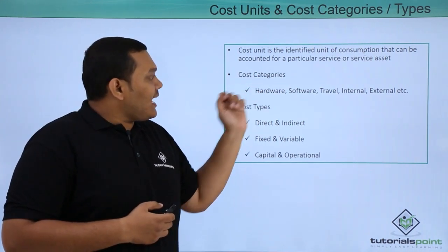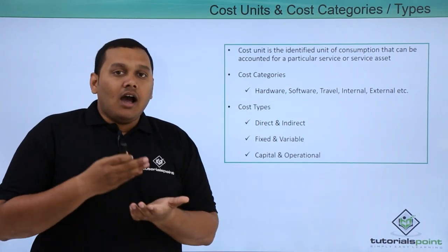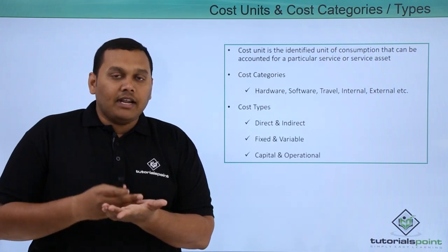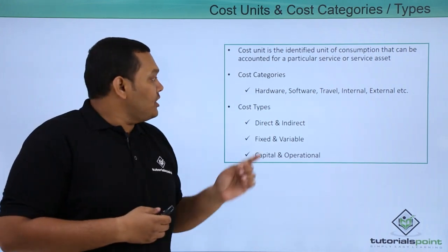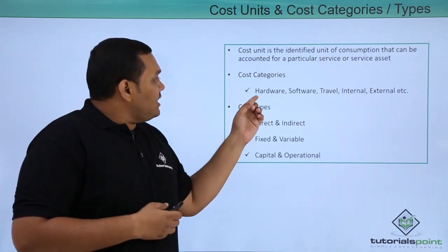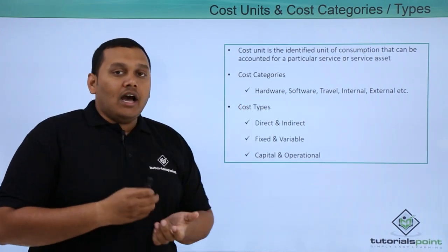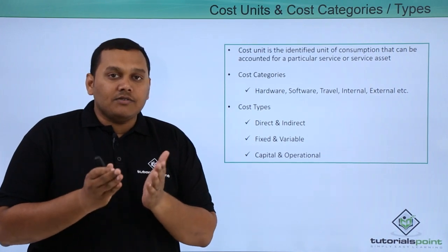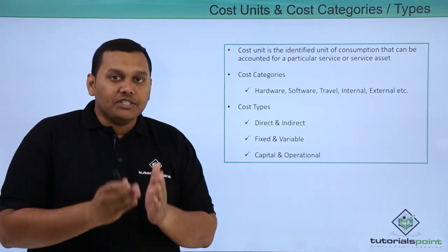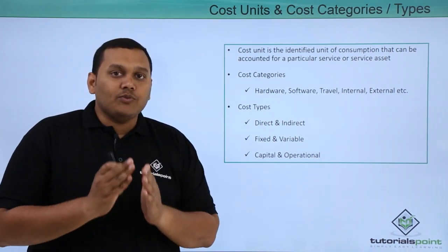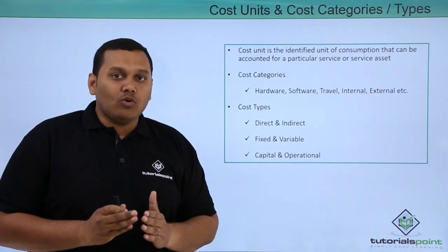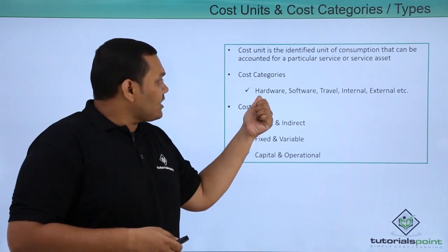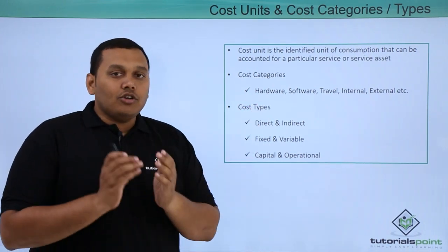Coming to the cost categories, how many cost categories are there in financial management? We see here hardware cost, like purchasing servers and purchasing network devices like routers, which comes under this category.